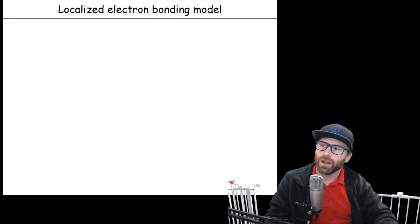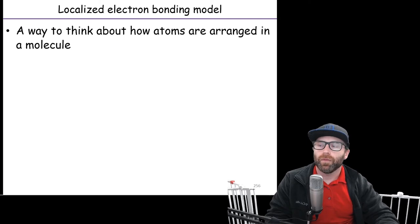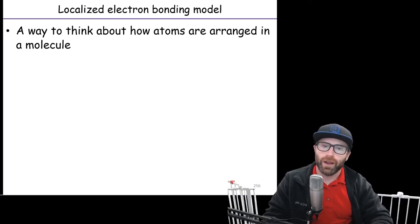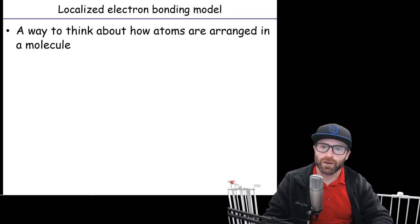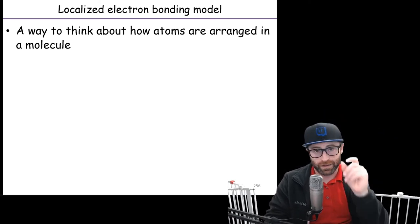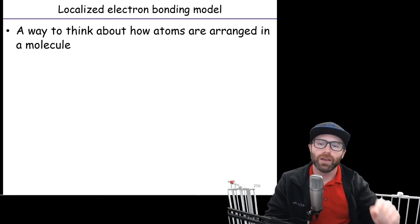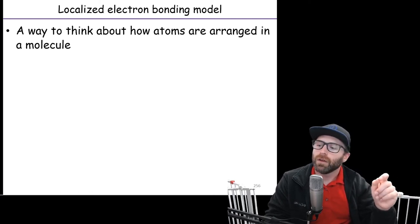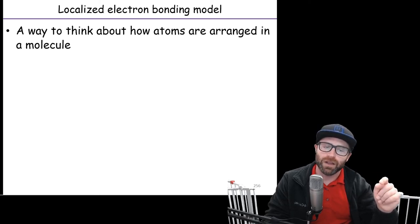The first model we're going to talk about is the localized electron bonding model. Punchline — all these different models are going to be constructs for us to think about how atoms are oriented in space with respect to one another, and to get some crude approximation of how the electrons around atoms might be interacting with the electrons on other atoms and the nuclei on other atoms to form molecules. This is not going to be like a hard, fast way to think explicitly about where one electron is. This is going to be a way for humans to communicate with other humans about where electrons might be and how molecules look. So it's a thought process — it's a thought technology.